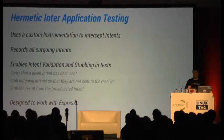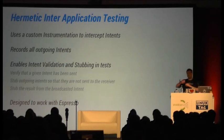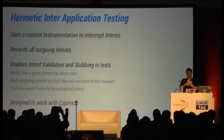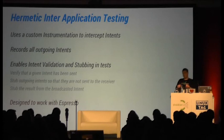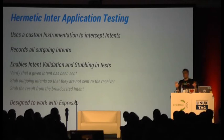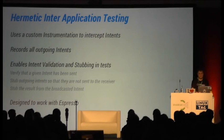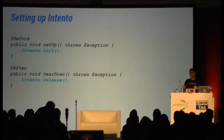Intento allows you to do mock inter-application testing. It uses a custom instrumentation runner and basically records all outgoing intents and enables two scenarios. One is you just want to verify — for example, if you have a button that opens the native dialer, you want to verify that the correct intent was fired. The other scenario, which is more powerful, is that you want to stub the result that's returned — that's important for the contact picker example. It was designed to work with Espresso, but it uses the normal instrumentation itself and can be used in any instrumentation test. It's also very easy to use: you just call intento.init() to initialize it and intento.release() to release it.